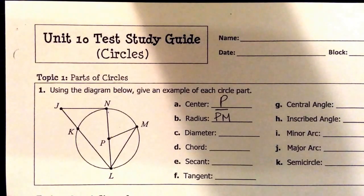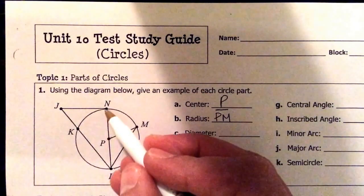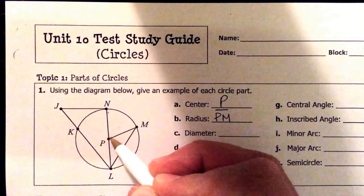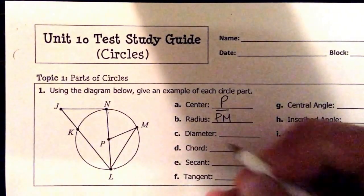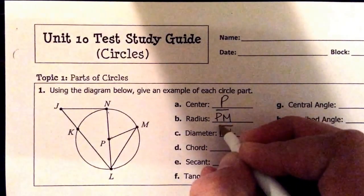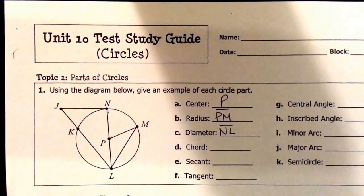For the diameter, you have to remember that the diameter goes from one edge of the circle all the way to the other edge of the circle, but the key part is it goes through the center. So we don't need all three letters, NP and L. We just need the endpoints, N and L. Again, it's a segment. Put your little bar over it.